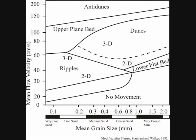Here we see antidunes. These are evidently antidunes as they are migrating in an upstream direction. This is a flow regime chart. It shows which structures will form when sediment of a known grain size is moved by a current of known velocity. This is the size of the largest sediment found to be forming the antidunes in the video shown.